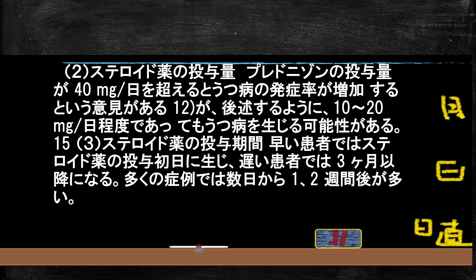ステロイドの1日の投与量が40mgを超えるとうつ病の発症の危険が高まりますが、実際には10〜20mgという少ない量でもうつ病が出るのではないかと言われています。どのくらいのスパンで出てくるかというと、投与1日目から出る人もいますし、遅くても3ヶ月程度。だいたい1〜2週目にうつ病を発症する例が多いです。